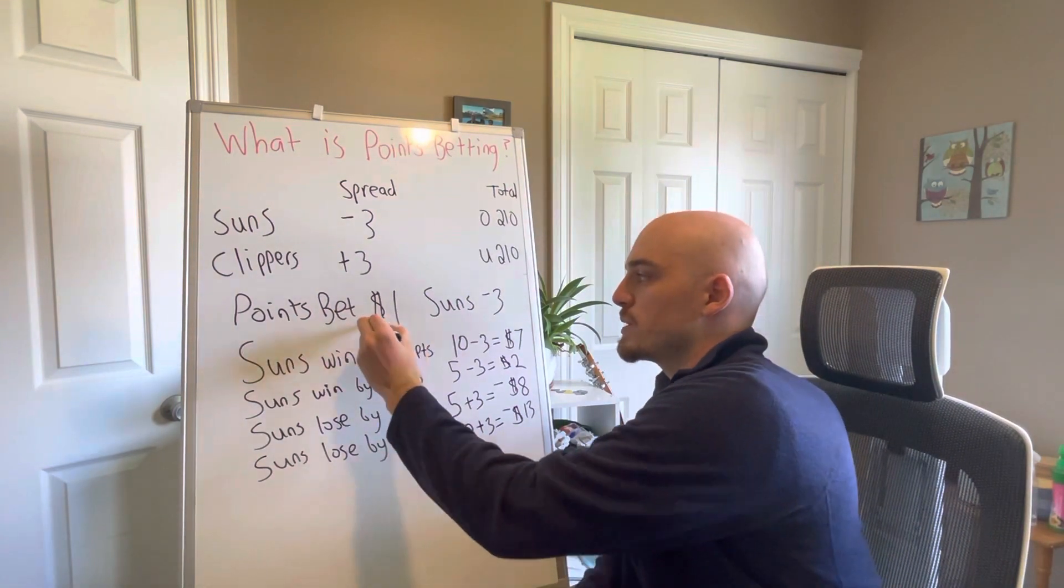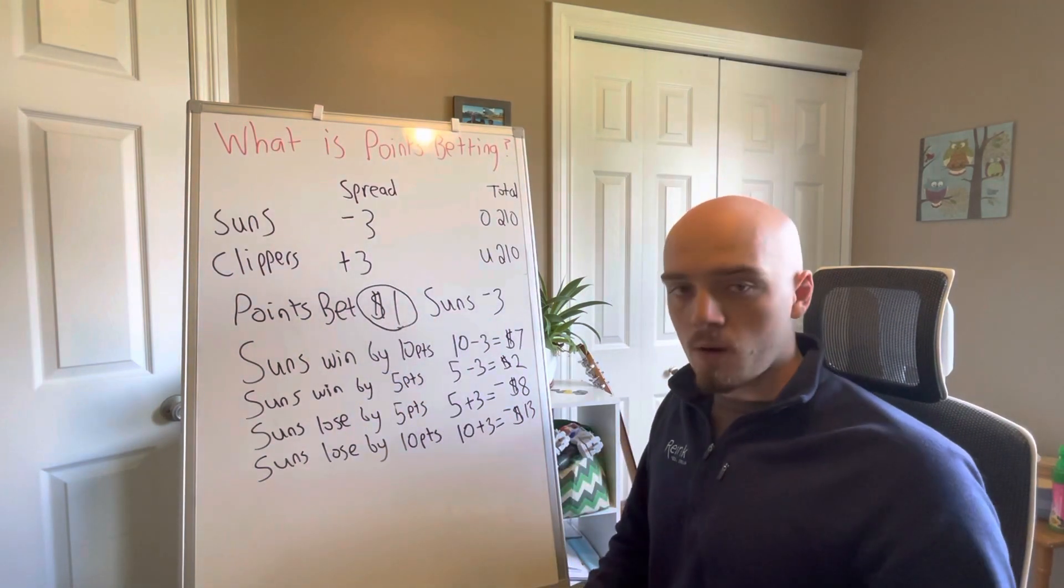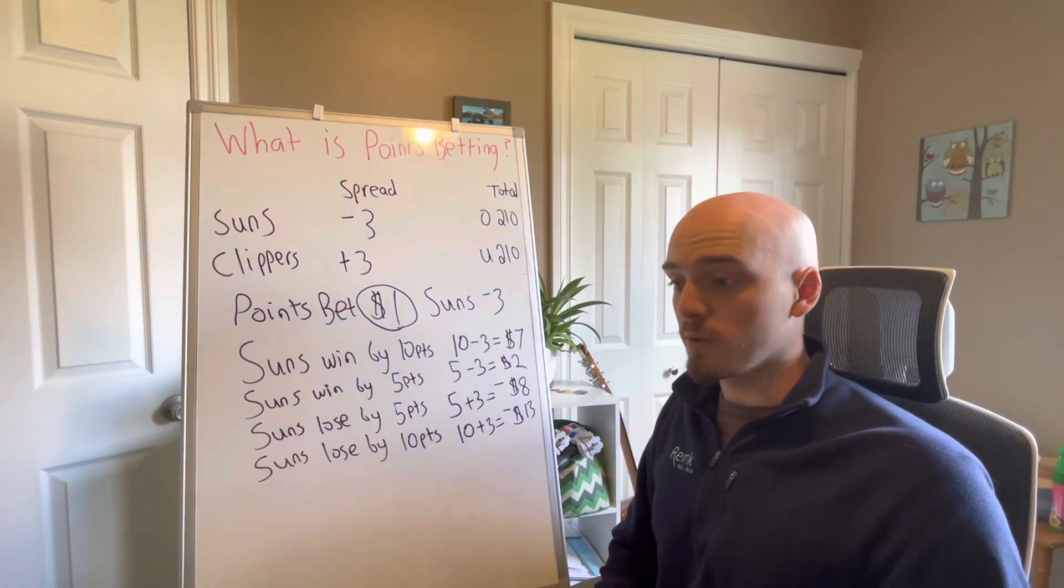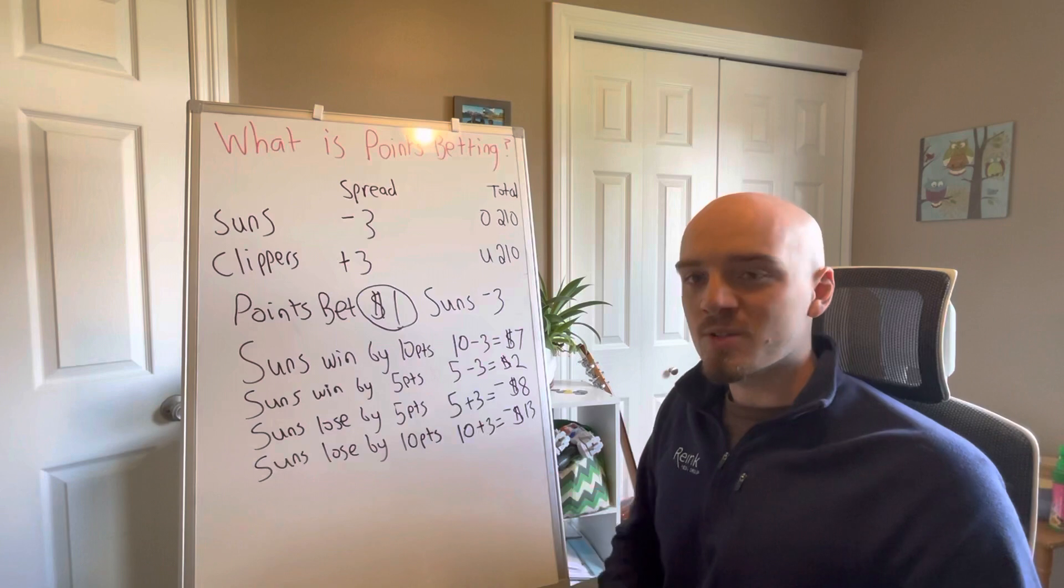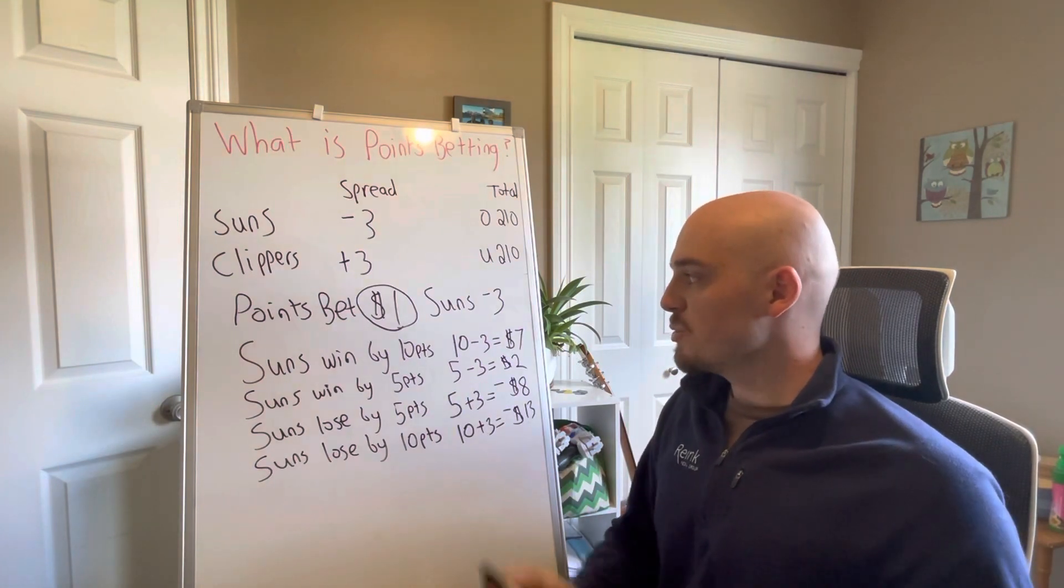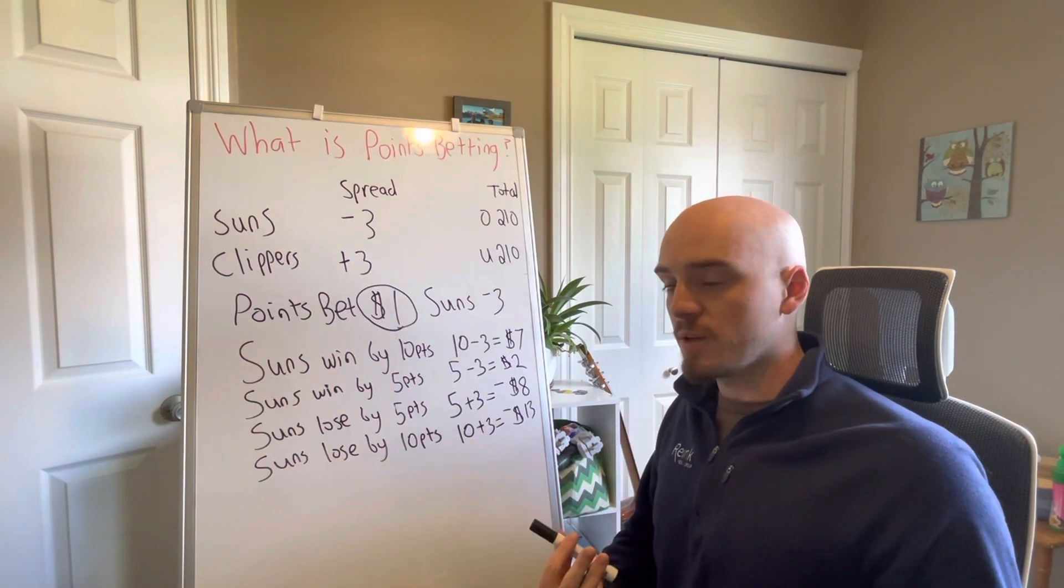With points betting with this multiplier here, you can bet all the way up to over $100 a point if you wanted to, if you were a high roller. Or you can bet $2 or $4. You set the multiplier, so you kind of set the total amount of risk that you want to take in.